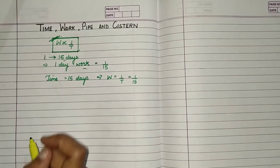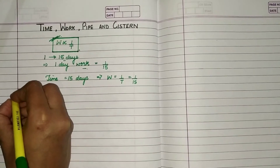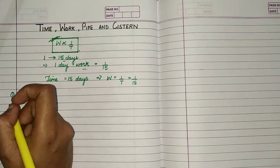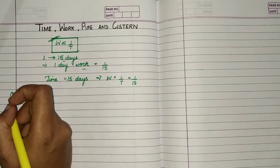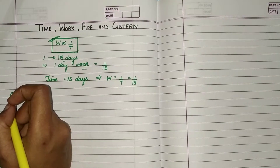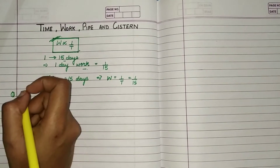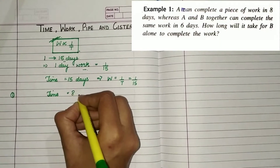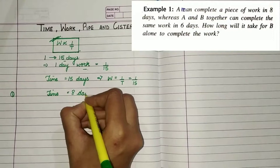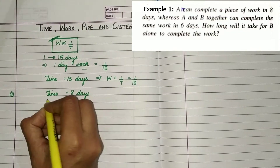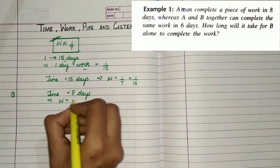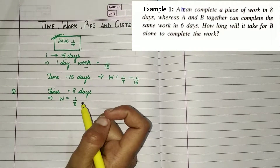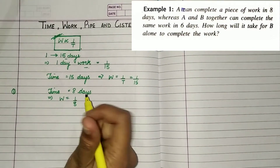Let's apply this formula. With this formula, we can solve any kind of competitive-level questions related to time, work, pipe and cistern. Let's do our first example. A man completes a piece of work in 8 days — that is, A can do a job in 8 days.